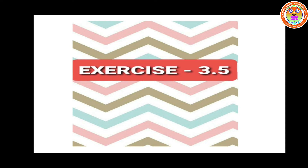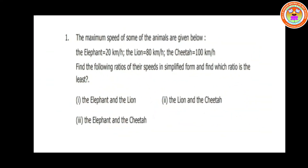I will send you the notes to copy down in your rough note — I will send you as a PDF, then you can copy down. Shall we move on to the problems? Problem number one: the maximum speed of some animals are given below — the elephant 20 km/h, the lion 80 km/h, the cheetah 100 km/h.